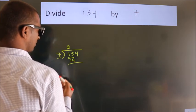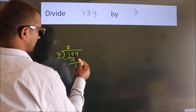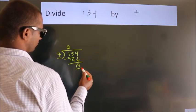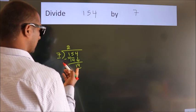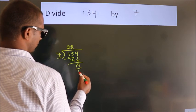Now we should subtract, we get 1. After this, bring down the beside number, so 4 down, so 14. When do we get 14? In 7 table. 7 twos, 14.